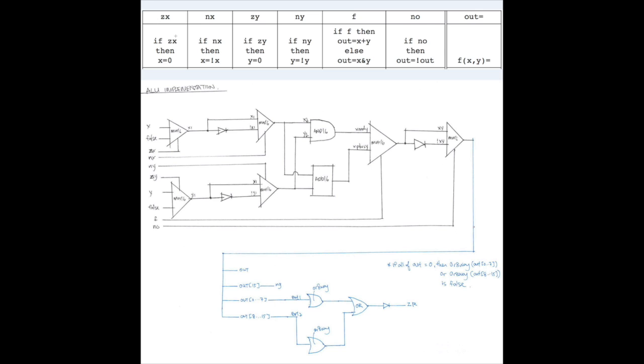Because we have a selection here, whenever you see an IF, you can roughly guess that it involves multiplexer. Whenever you see an IF, you know that you can actually use multiplexer to do the selection.